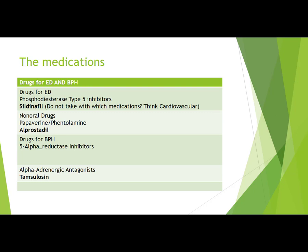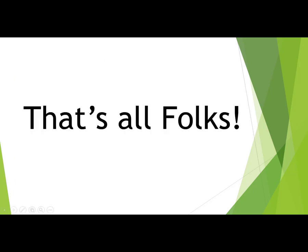For erectile dysfunction, PDE5 inhibitors like sildenafil are used — as covered in the cardiovascular module. The critical interaction to remember: PDE5 inhibitors must never be taken with nitrates such as nitroglycerin due to the risk of extreme hypotension. Non-oral options like papaverine and phentolamine exist but are not commonly used. Drugs for benign prostatic hyperplasia include 5-alpha reductase inhibitors and alpha adrenergic antagonists like tamsulosin.